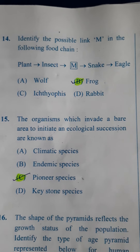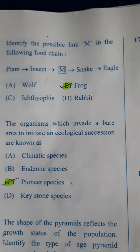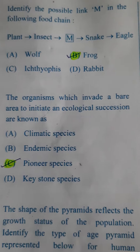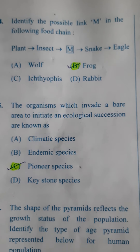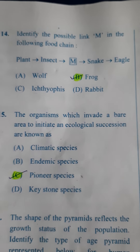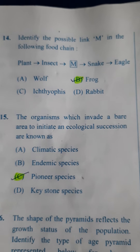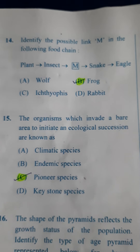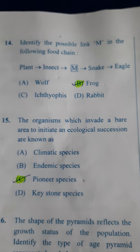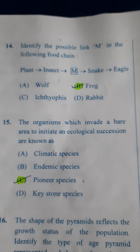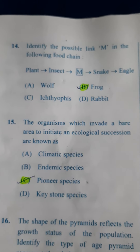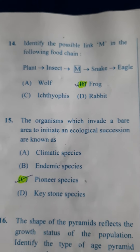Next: Identify the possible link M in the following food chain. Plants are eaten by insects; insects are eaten by M; M is eaten by snake; and then by eagle. If you compare the four options, frog will be best suitable here. So the answer here is frog — B.